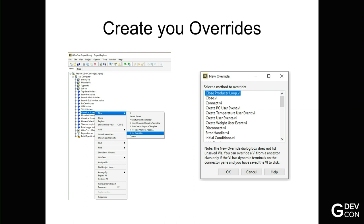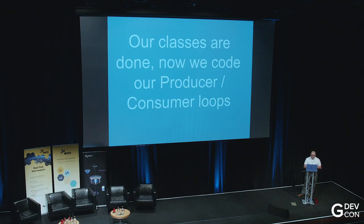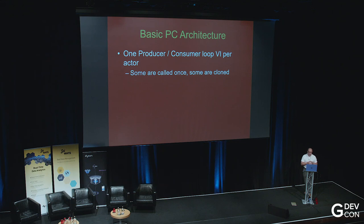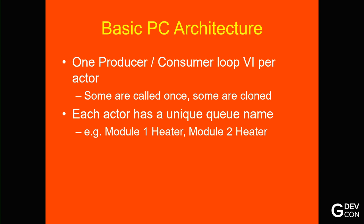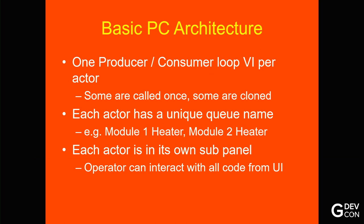You then get a little window pop-up, and it tells you the overrides you can write to or you can create. So, for instance, you might want to do connect or you might want to do initial conditions. So you just create the ones you want to. And up pops a window. You delete that middle VI, you put your code in there, and that is your override written. So now that our classes are done, now we can start to code our producer-consumer loops. So the basic PC architecture is we have one producer-consumer loop VI per actor. So some are called once, like temperature monitor, and some are cloned. So like the heater-chiller controller will be called four times. Each actor has to have a unique queue name. So it might be module controller one heater-chiller unit, module two heater, that sort of thing. So they're all unique.